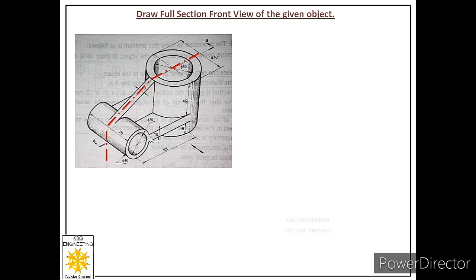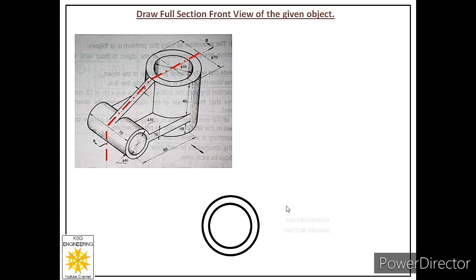Let us start with the circular face. To draw it, we draw two concentric circles: the diameter of the smaller circle is 30 millimeters and the diameter of the bigger circle is 40 millimeters. We open the compass to 20 millimeters as the radius for the bigger circle, construct the first circle, then with the same center construct the second circle with a radius of 15 millimeters.